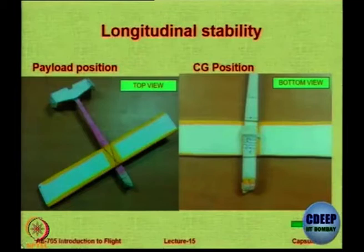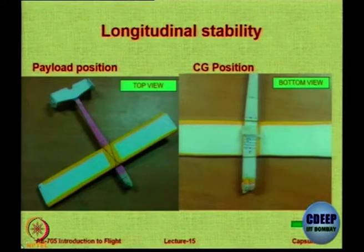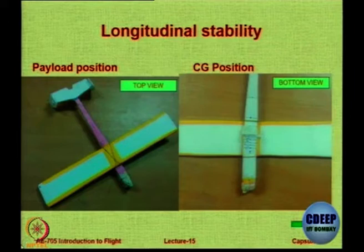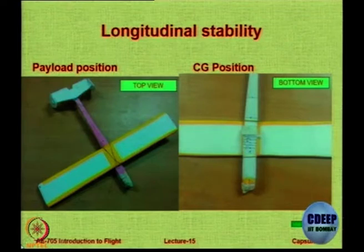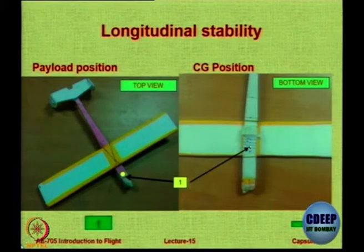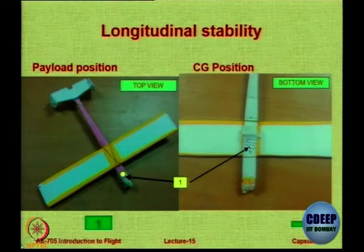This is the glider that was made — you have a top view and a bottom view. In the bottom view we have drawn lines showing the location of payload added to adjust the center of gravity. The aircraft has its own CG because of its geometry, but to change it we can only add weight using screws.